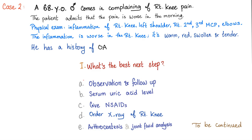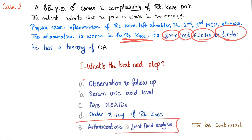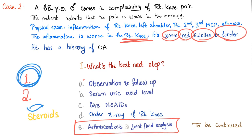When you see a warm, red, swollen, and tender joint, you do arthrocentesis. Why? Number one, to rule out septic arthritis because it's an emergency. Number two, to confirm the diagnosis. Also, because if it's inflammatory and you decide to give steroids, you better rule out infection before you give steroids.